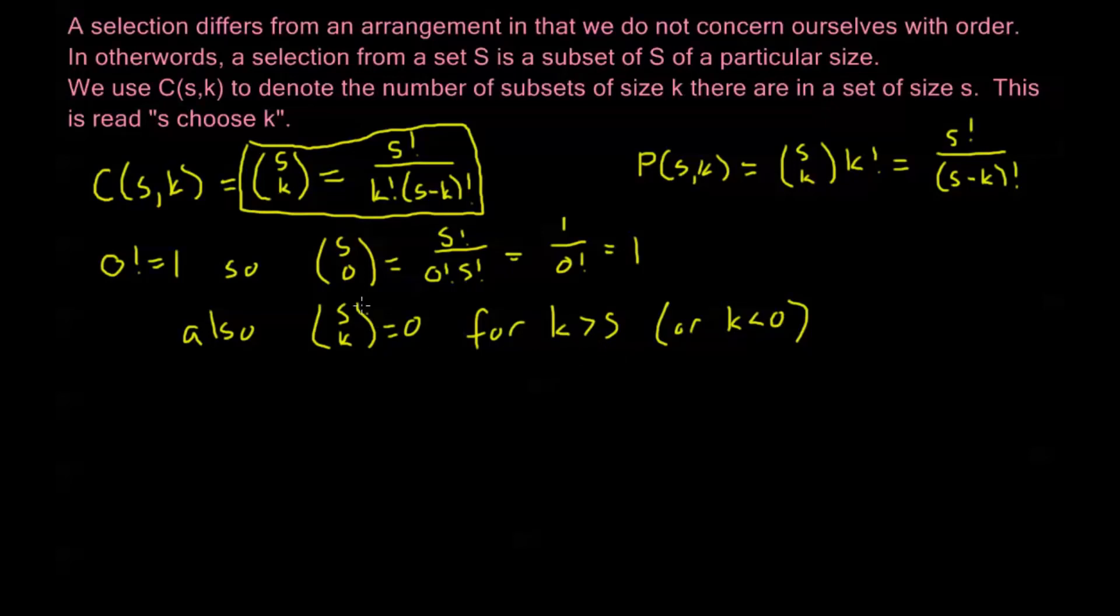If K is bigger than S this is saying well I have this set of S elements, how many ways are there for me to choose more than S of those out of my set of S elements? Well there's 0 ways to do that because I can never choose more than what I have. If I have 5 apples there are 0 ways for me to choose 6 of those apples. Now if K is less than 0 it also makes sense. If I have 5 apples how many ways are there for me to choose negative 1 apples? That doesn't really make sense.